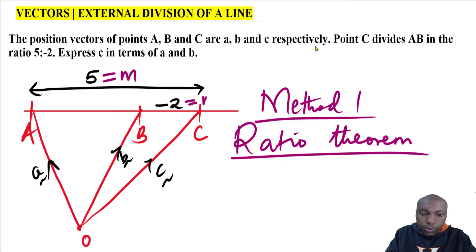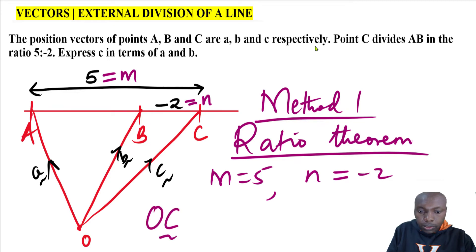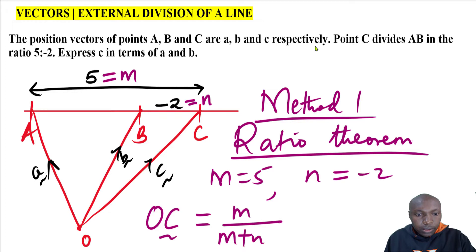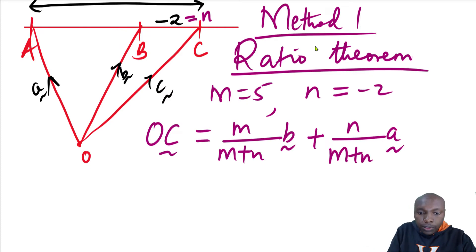Using the ratio theorem, I'll let 5 be denoted by m and negative 2 be n. So m equals 5 and n equals negative 2. To get OC, the ratio theorem gives: m divided by (m plus n) multiplied by vector b, plus n divided by (m plus n) multiplied by vector a.